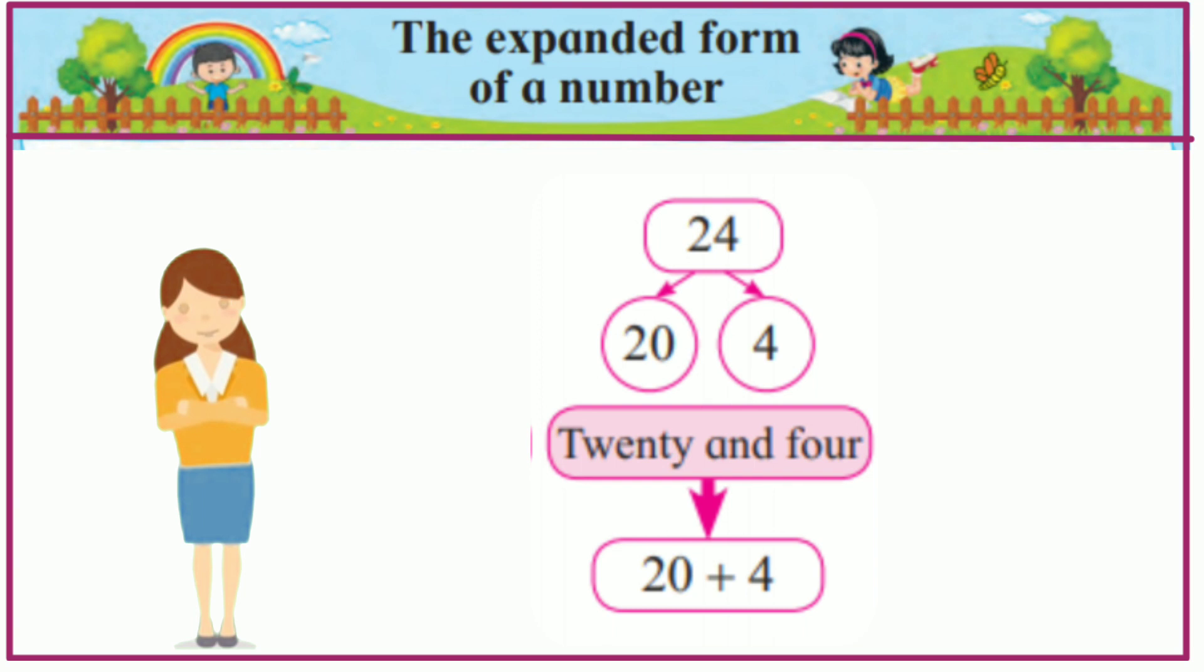24. The place value of 2 is 20 and the place value of 4 is 4. Means 20 and 4, so expanded form will be 20 plus 4.